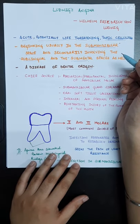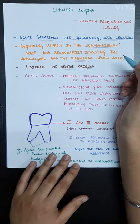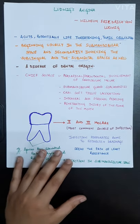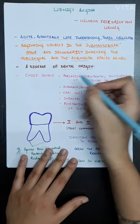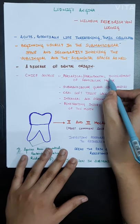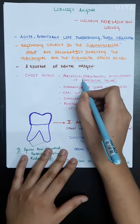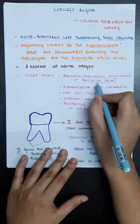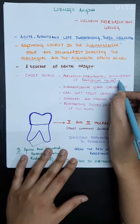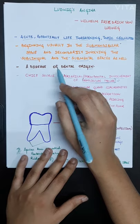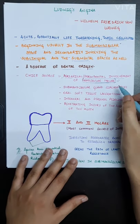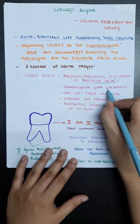The chief source is periapical or periodontal involvement of mandibular molars. So mandibular molars are the main cause of this infection. Submandibular gland sialadenitis—the inflammation of submandibular gland—may also cause Ludwig's angina.